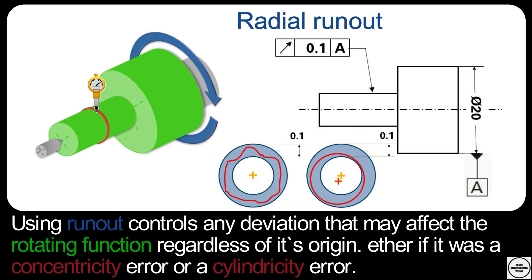What I measured now is the circular runout. If I now want to control not only the runout on one circle on the part, but on all cross sections, then I would have to use the total runout tolerance.